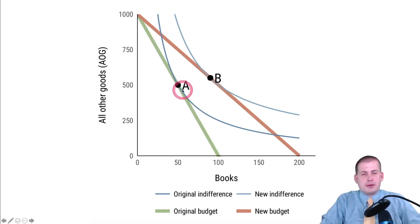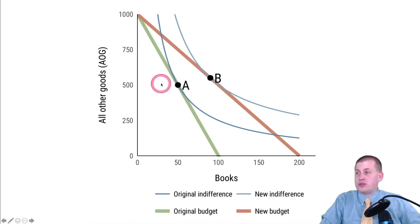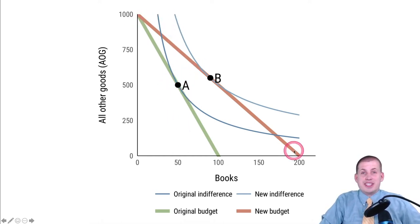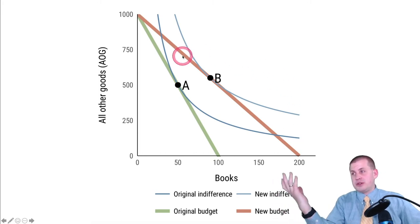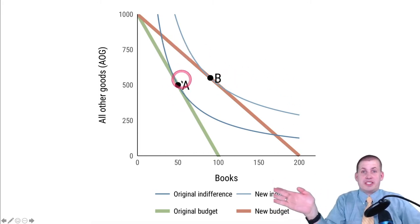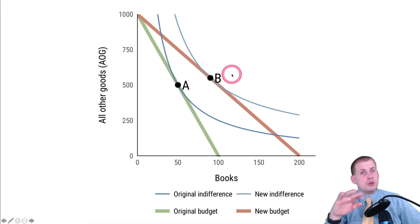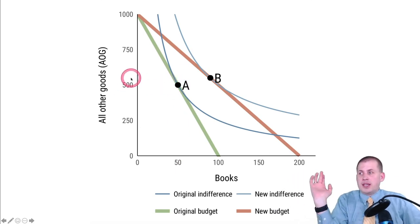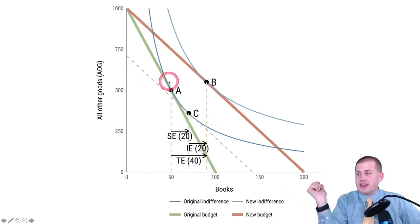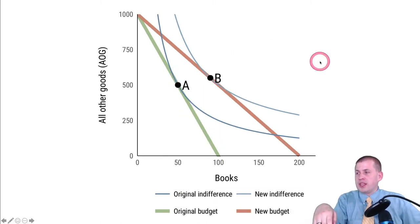We can assume that this indifference curve is meeting the budget line where it's supposed to, and that is the place where it makes this person the happiest. Notice there's no math, no square roots, no first derivatives — just a line and an indifference curve drawn together, which is a totally normal thing to do. There are mathy ways of doing this if given a utility function, but we don't care about that for this class. Right now this person is consuming 50 books and 500 other things.